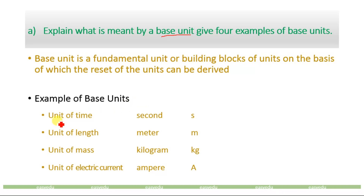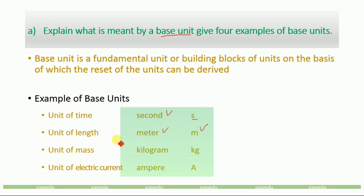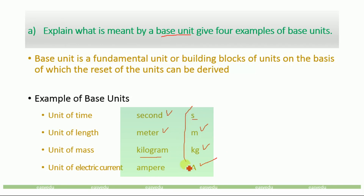Examples of base units: the unit of time is the second, represented by s. The unit of length is the meter, represented by m. The unit of mass is the kilogram, represented by kg. The unit of electric current is the ampere, represented by A. These are four examples of base units; there are seven base units in total.